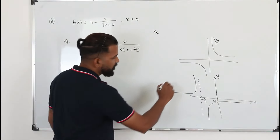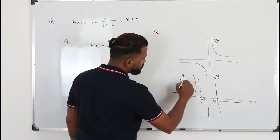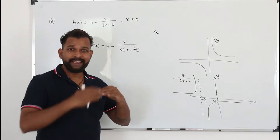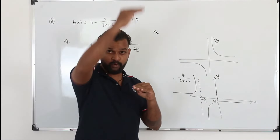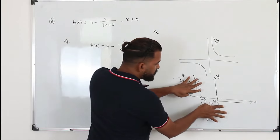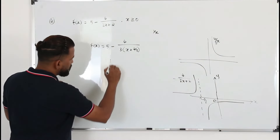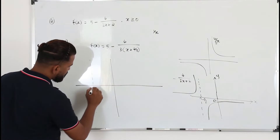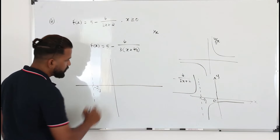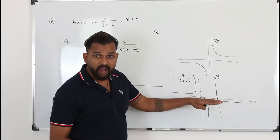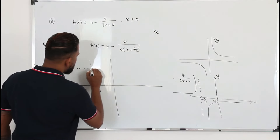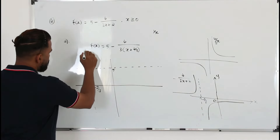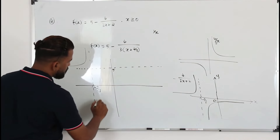This gives the graph of minus 4 over 3(x plus 2 over 3). Then adding 5 is a translation along the y-axis upwards by 5 units, so you move this graph 5 units upwards. You have one vertical asymptote at minus 2 over 3, and when you move the graph upwards 5 units you get one horizontal asymptote at y equals 5.